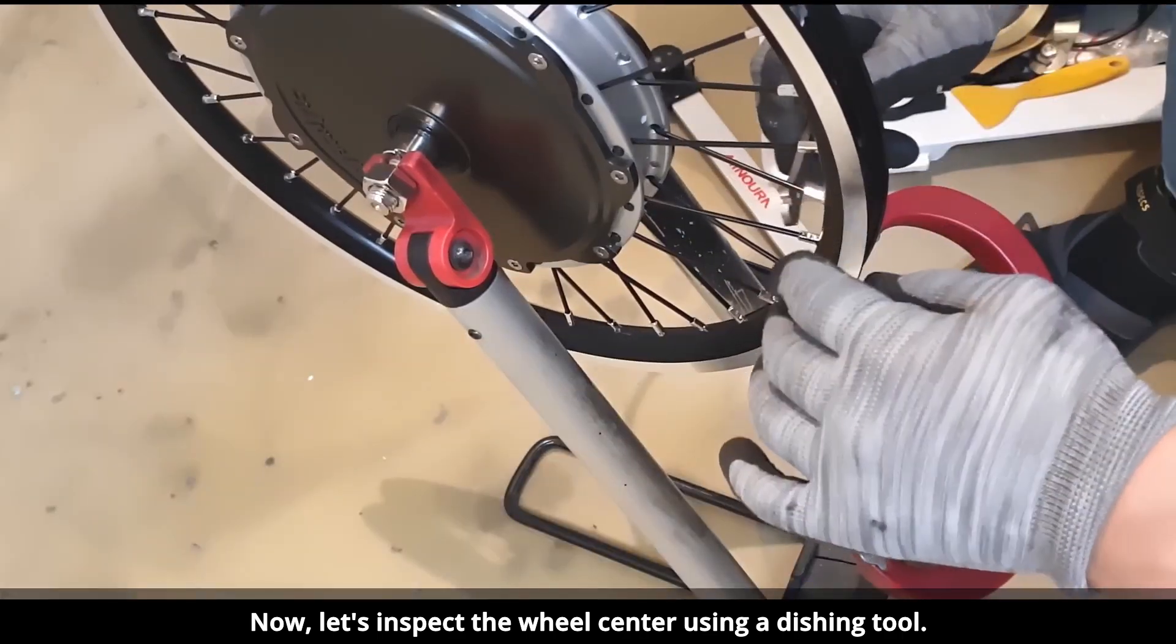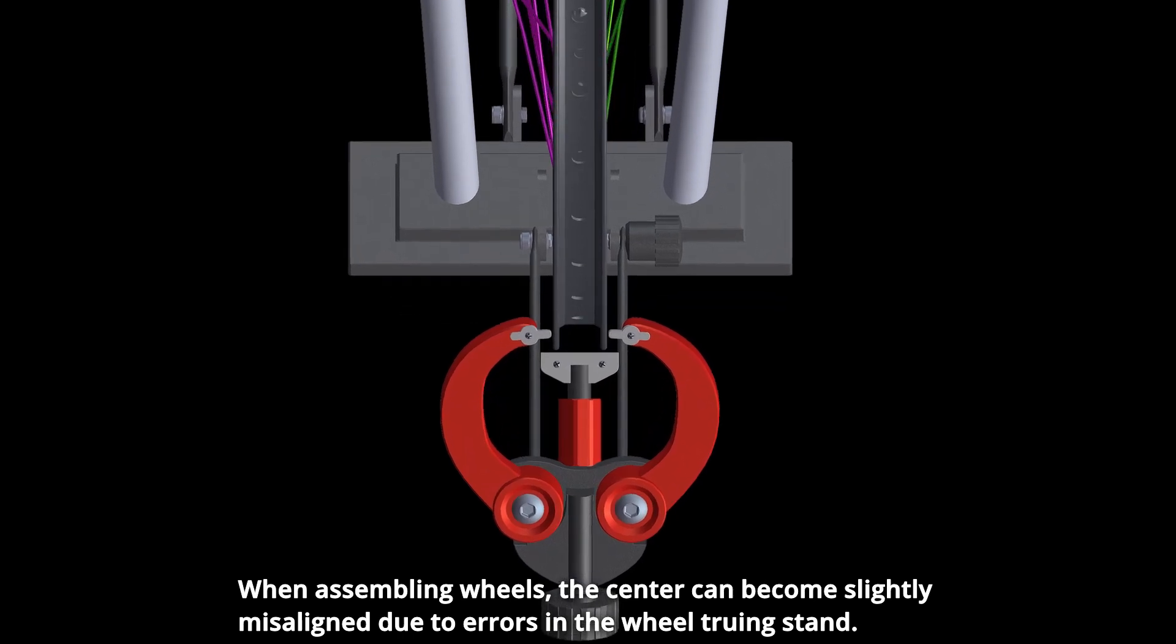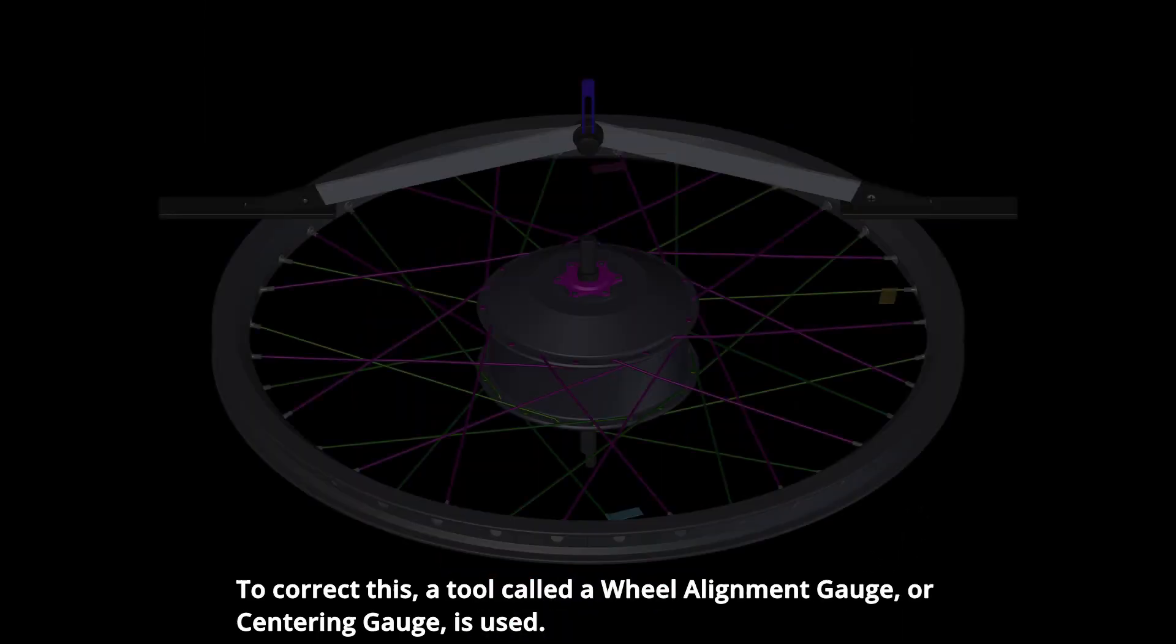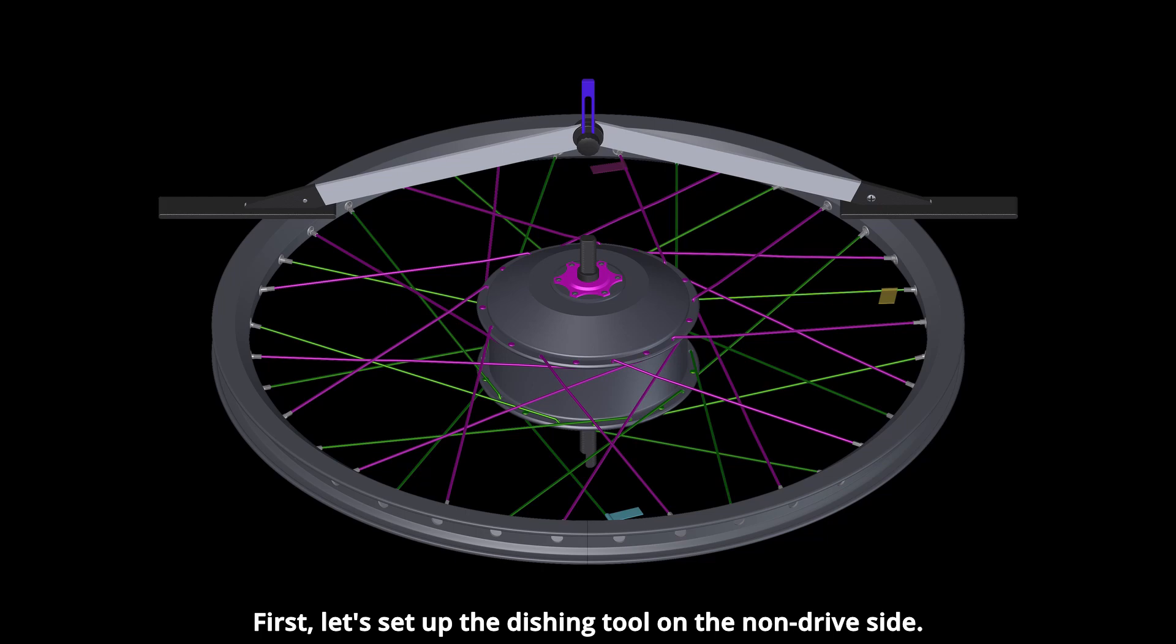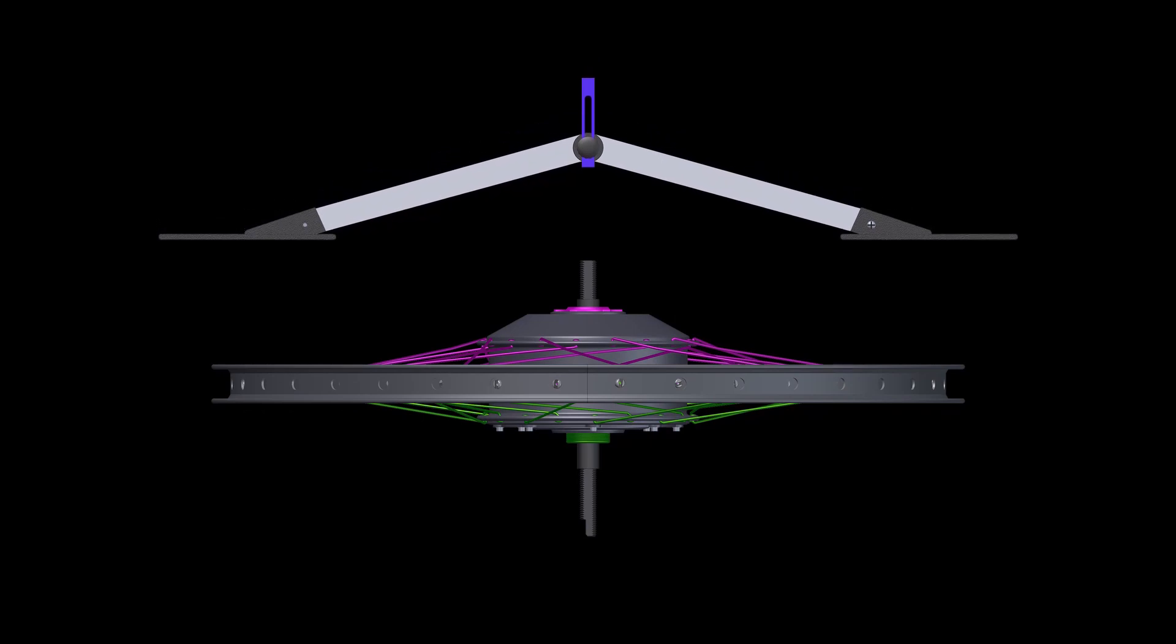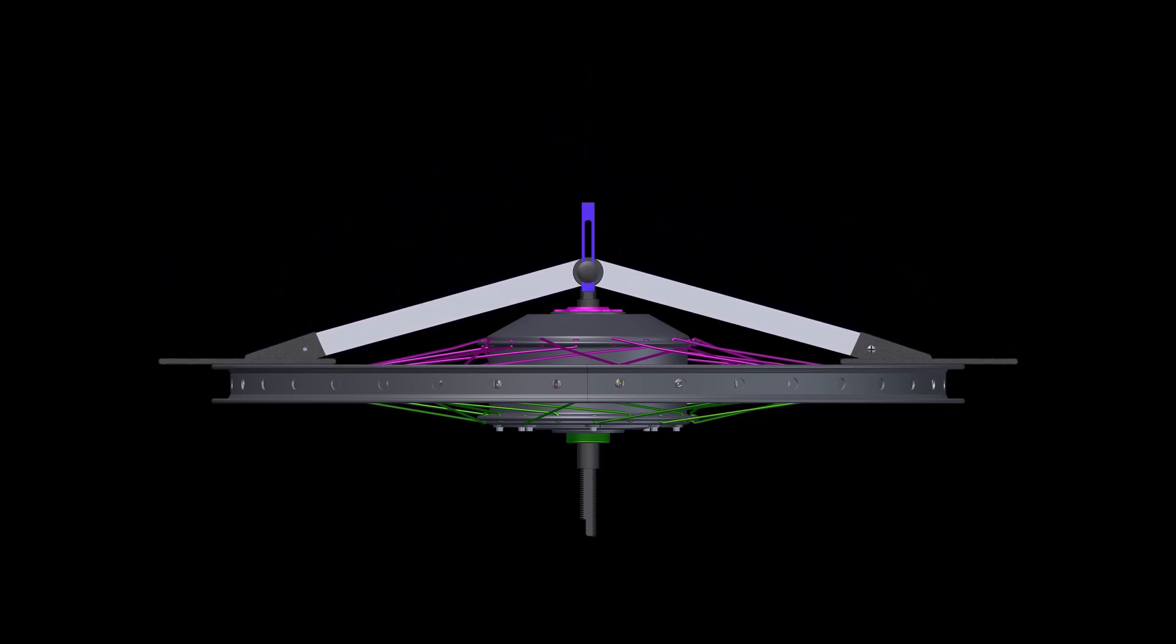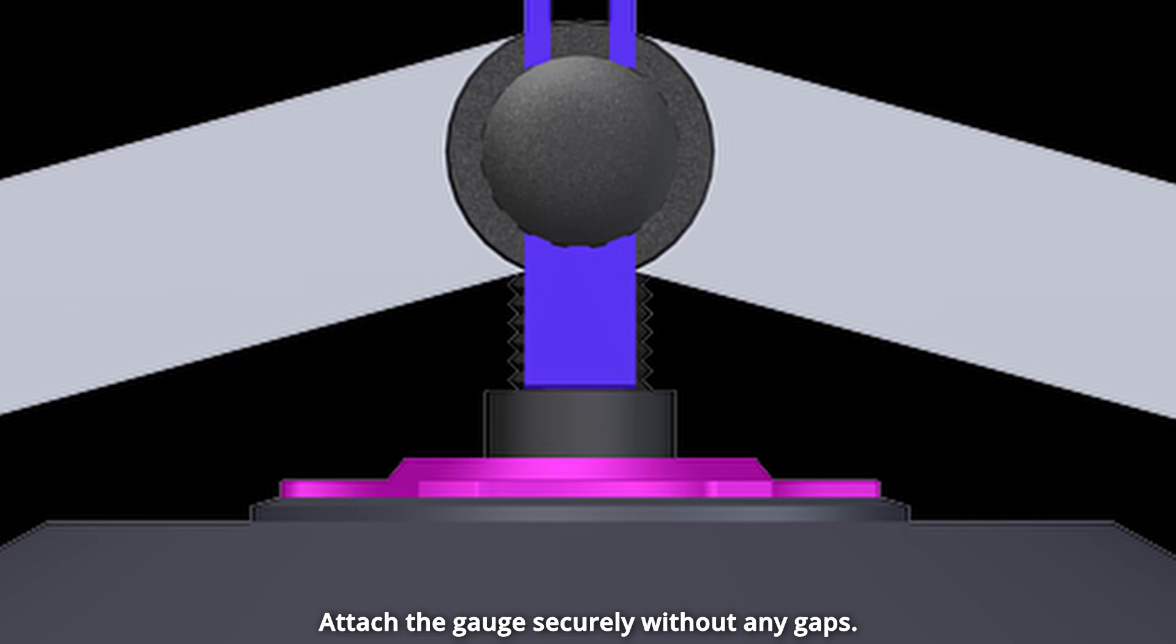Now, let's inspect the wheel center using a dishing tool. When assembling wheels, the center can become slightly misaligned due to errors in the wheel truing stand. To correct this, a tool called a wheel alignment gauge, or centering gauge, is used. First, let's set up the dishing tool on the non-drive side. Attach the gauge securely without any gaps. Now, fix the gauge in place.